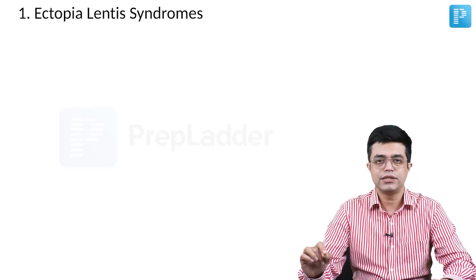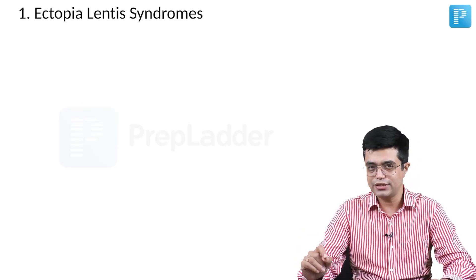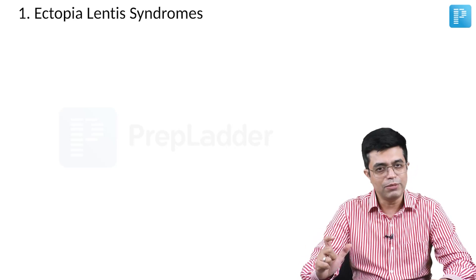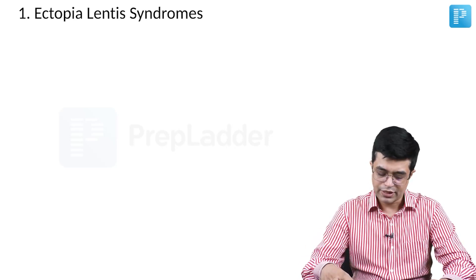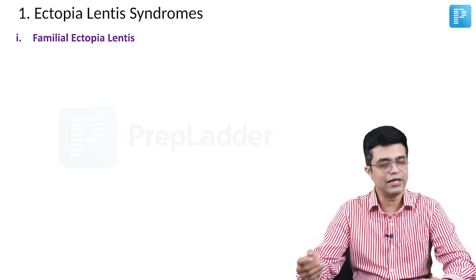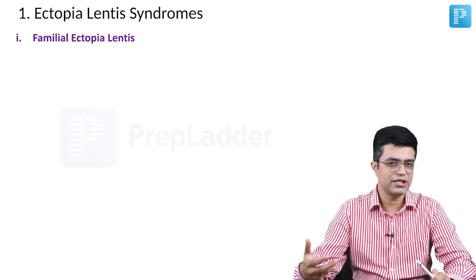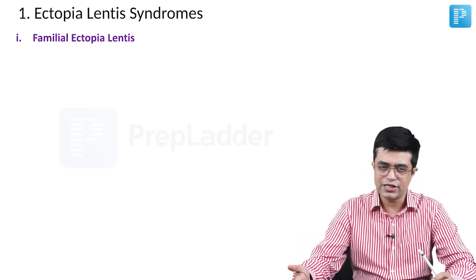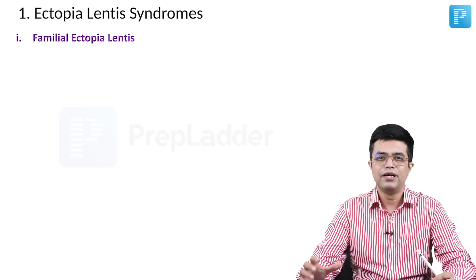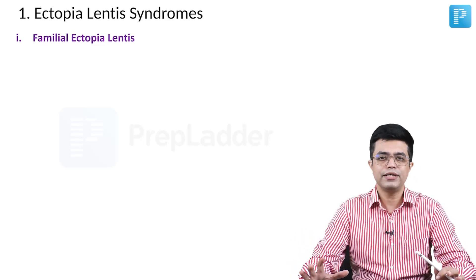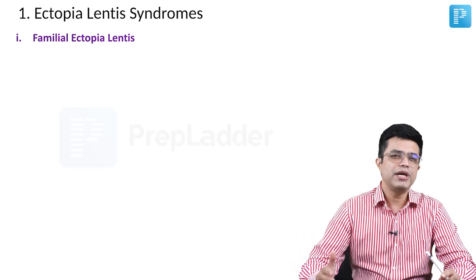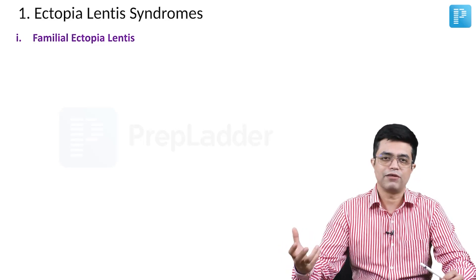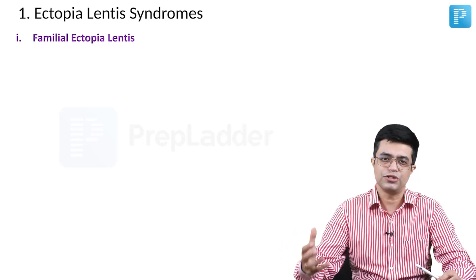The first category is ectopia lentis syndromes — syndromes in which ectopia lentis will be present. The first is familial ectopia lentis. There are many theories and many genetic loci which have been defined. There is isolated ectopia lentis; these patients may or may not have a marfanoid habitus, that is, marfanoid morphology of systemic features.